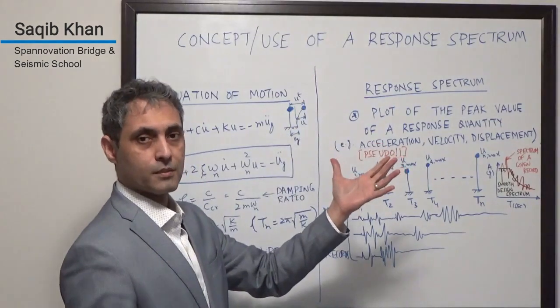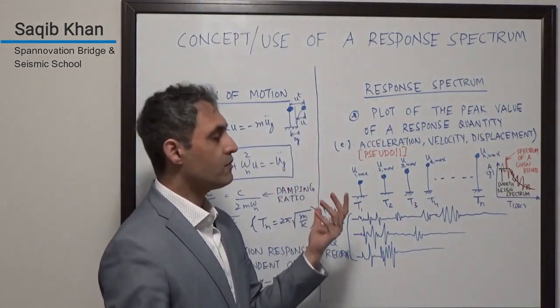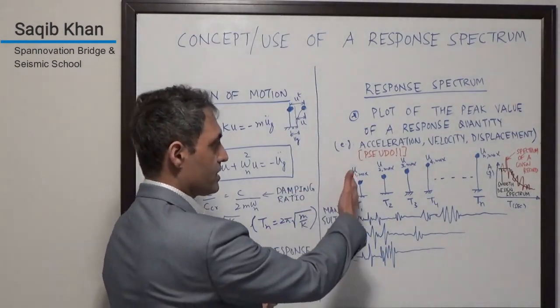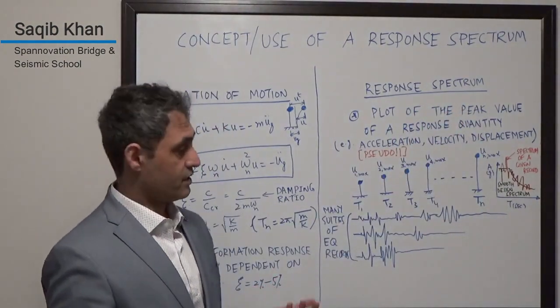A response spectrum is the plot of the peak value of a response quantity. That response could be the acceleration of the system, the velocity of the system, or the displacement of the system.